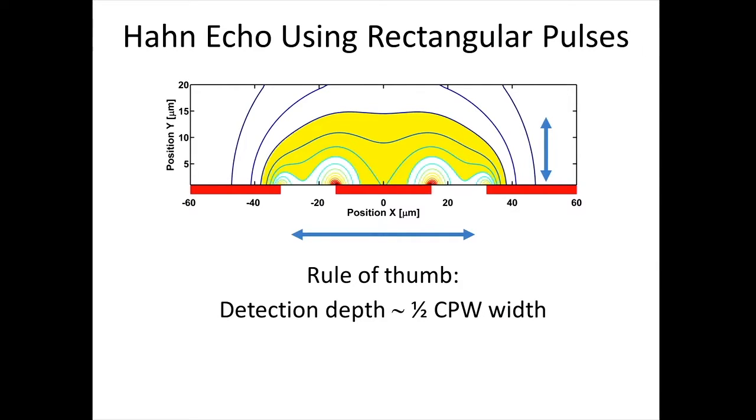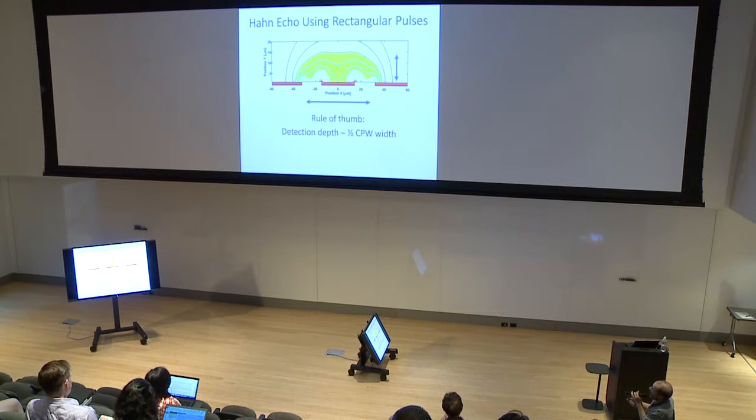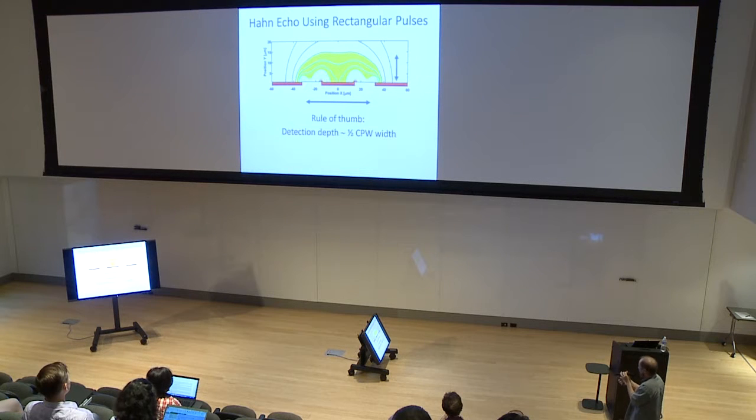So if you do a Hahn-Echo experiment using rectangular pulses, and if you tune your B1 field to produce a perfect pi over two pi rotations, for example, for spins located in this area, somewhere around this point, for example, in reality, you will be able to see a contribution from spins being here, there, and here as well, but with slightly lower intensity. Those spins will be under-rotated, those over-rotated, and only this small slice will be rotated. In any way, in Hahn-Echo experiment with rectangular pulses, this area is where spins will be contributing to two-thirds of our signals. This area can be defined very simple, rule of thumb, the detection, the depth of the spins which are detected in this configuration is approximately one-half of the coplanar waveguide widths.